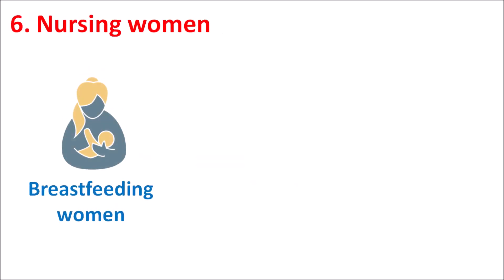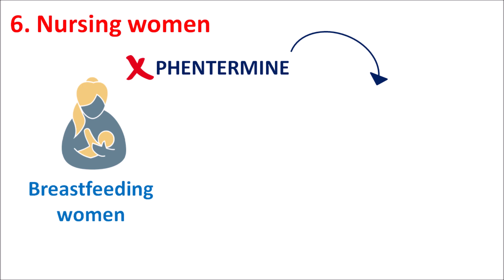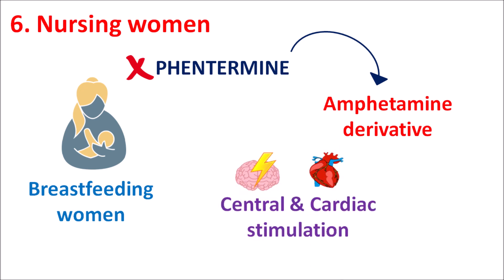The sixth contraindication is nursing women. In breastfeeding women, phentermine is contraindicated because it is a sympathomimetic structurally related to amphetamine — an amphetamine derivative. Amphetamines are secreted into breast milk, increasing consumption of the drug by infants, which may lead to central and cardiac stimulation resulting in convulsions, tachycardia, and palpitations — all of which are fatal.